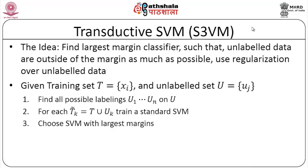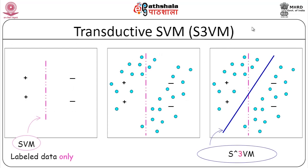Transductive SVM, also called S3VM, is another semi-supervised approach. The idea is to find the largest margin classifier such that unlabeled data are outside the margin as much as possible, using regularization over unlabeled data. Given a training set T and unlabeled set U, find all plausible labelings on U, train a standard SVM for each, and choose the SVM with the largest margin. The S3VM boundary differs from the supervised SVM boundary because of the presence of unlabeled instances, which cluster around positive and negative regions and allow the boundary to differentiate the two appropriately.